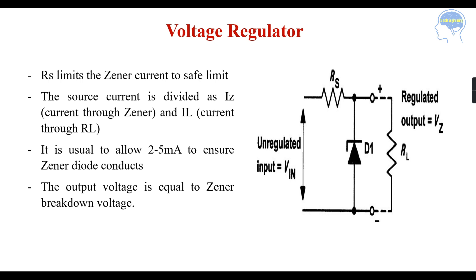In the voltage regulator circuit you have a series resistance RS, a Zener diode, and a load resistance RL. The unregulated input is denoted as Vin, and because of this Zener voltage regulator we will be getting a regulated output which is Vz. RS limits the Zener current to a safe limit, and the source current is divided as IS to the Zener and IL to the load resistance RL.